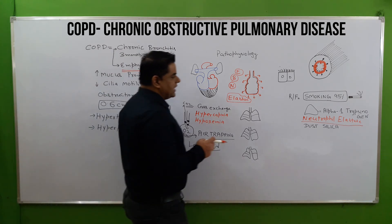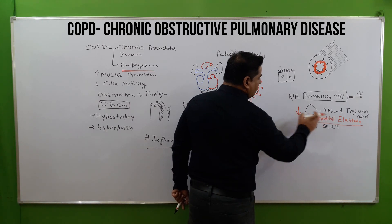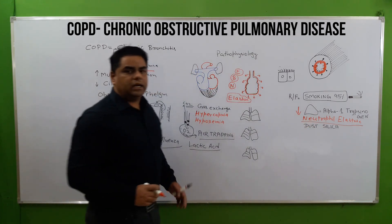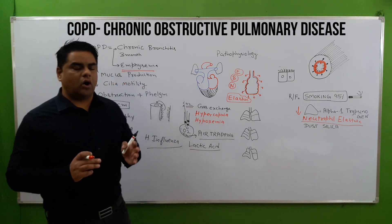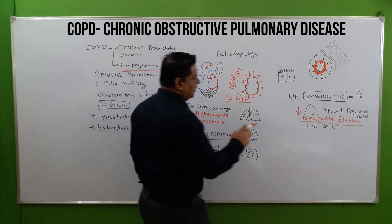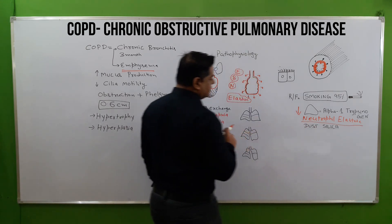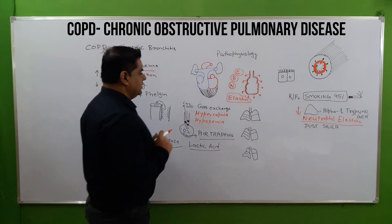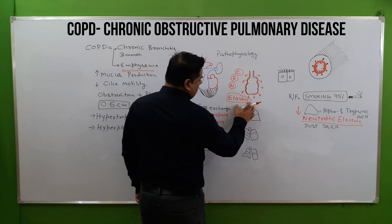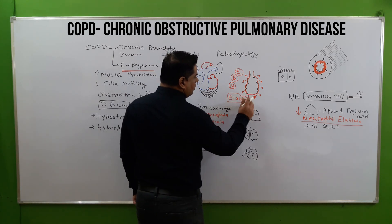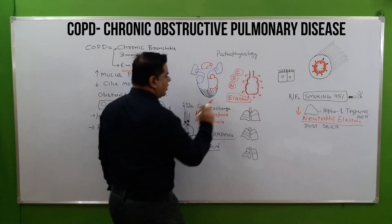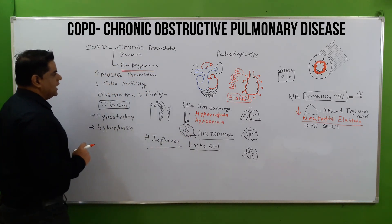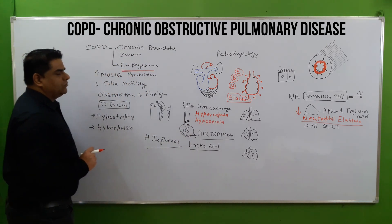In emphysema there is less production of alpha-1 trypsinogen. Kindly note that patients with liver damage are also at risk for alpha-1 trypsinogen deficiency. Without it, there will be no elasticity and the alveoli will not be able to recoil.